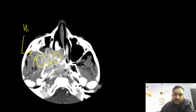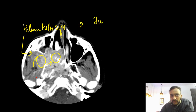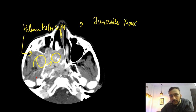This is known as the Holman-Miller sign. So this is a case of juvenile nasoangiofibroma.